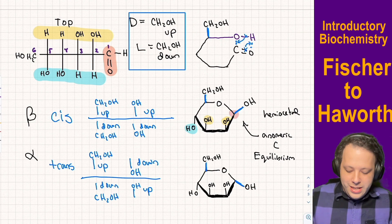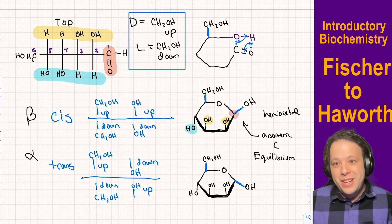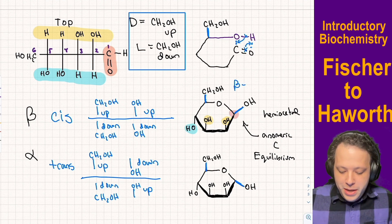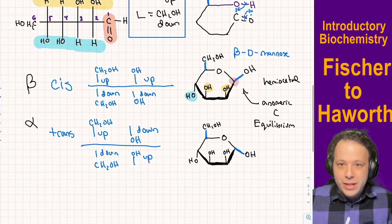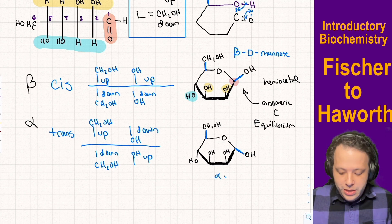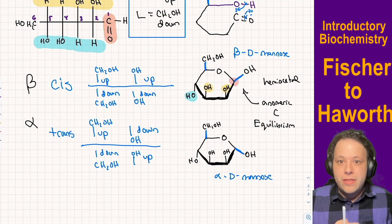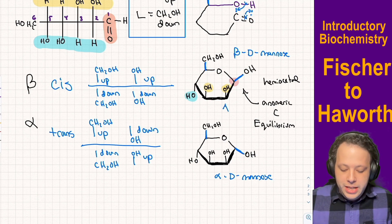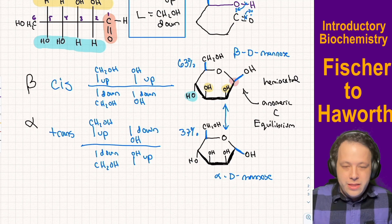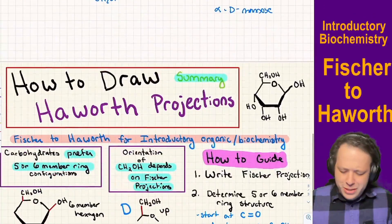So that is how you draw your Haworth projection for mannose. If we name both: this one would be beta-D-mannose, and this would be alpha-D-mannose. These are anomers of each other and both exist in equilibrium — beta tends to be about 63% in existence and alpha is 37% in nature.